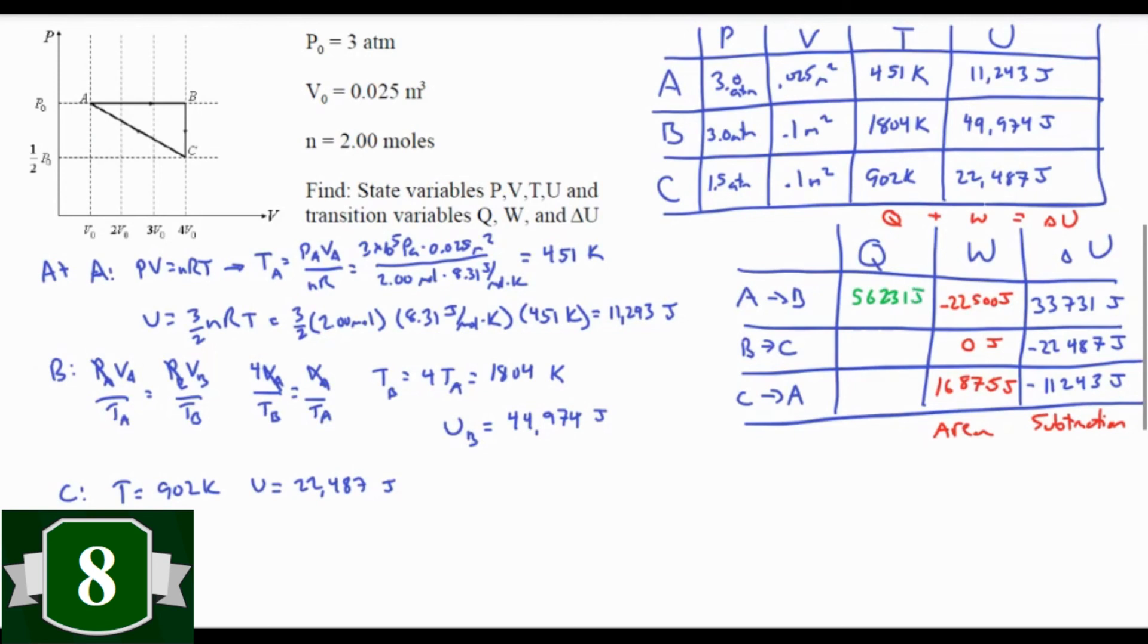From there, we just plug W and delta U into delta U equals Q plus W to get our values for Q. We add a lot of heat from A to B, and then we exhaust a lot of heat from B to C and C to A. If we want to know the efficiency of this engine, we can take the total work done, that's A to B plus C to A, and then divide by the total amount of heat that we added to the system, that's from A to B. We get a whopping 10 percent efficiency. Comparatively, a perfect Carnot engine operating from our high and low temperatures is, well, the efficiency is the percent difference between those high and low temperatures, which is 75 percent. This engine is pretty inefficient.